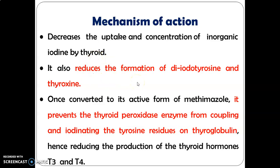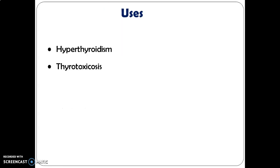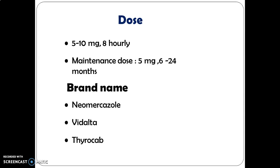Mechanism of action of carbimazole: it decreases the uptake and concentration of inorganic iodine by the thyroid. It also reduces the formation of diiodotyrosine and thyroxine. Once converted to the active form methimazole, it prevents thyroid peroxidase from coupling and iodinating tyrosine residues on thyroglobulin, thereby reducing the production of T3 and T4. Adverse effects include skin rashes, bone marrow suppression causing neutropenia and agranulocytosis, sore throat, fever, stomach upset, and mouth ulcers. Uses: hyperthyroidism and thyrotoxicosis. Dose: 5–10 mg eight-hourly; maintenance dose 5 mg for 6–24 months. Brand names: Neomercazole, Vidalta, Thyrocap.